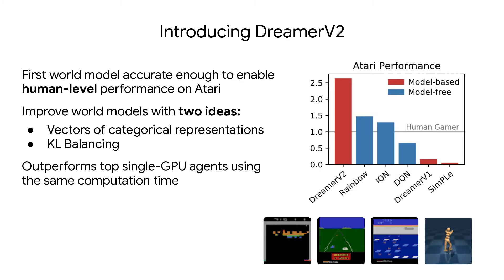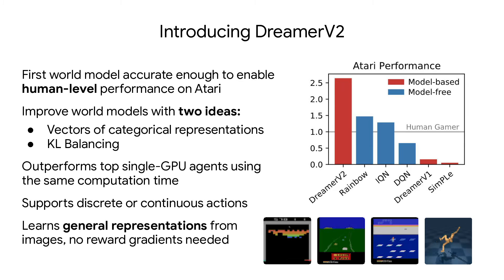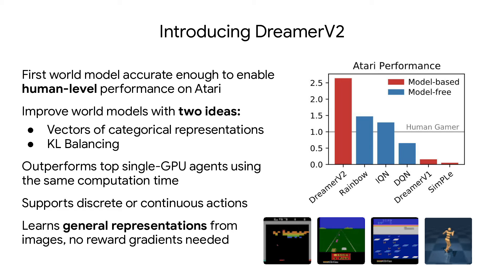DreamerV2 also outperforms top single GPU agents without world models, shown in blue, using the same computation time. It supports both discrete and continuous actions, and it learns general representations from images without having to rely on reward gradients for representation learning.